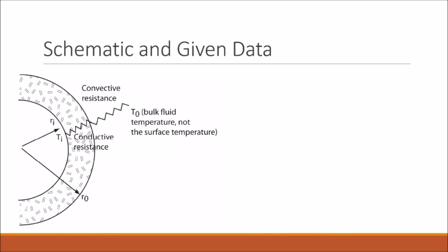So in this problem we're dealing with a hollow cylindrical pipe covered in insulation. We can represent the insulation with this hash part here, and we can represent the outer radius of the insulation as R0 and the inner radius of the insulation as Ri.